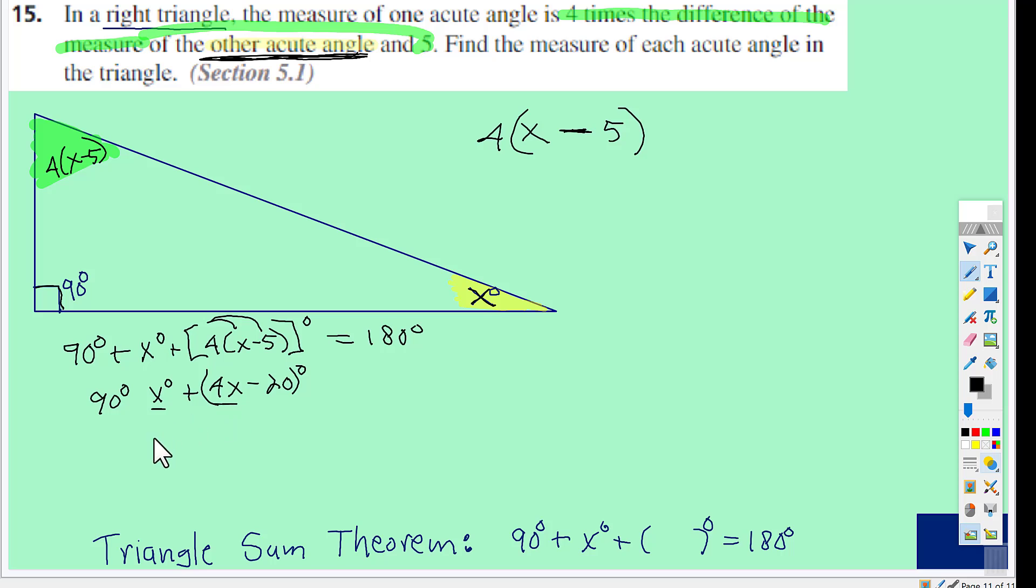Well, x and 4x is 5x, and then I'm going to move over here. So 90 subtract 20 is 70 degrees plus the 5x is equal to 180, and now you're just ready to solve.